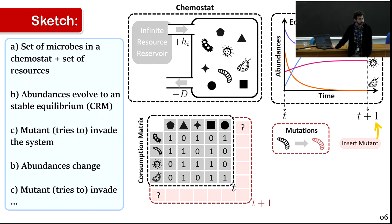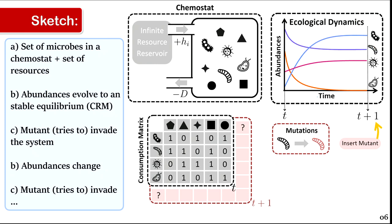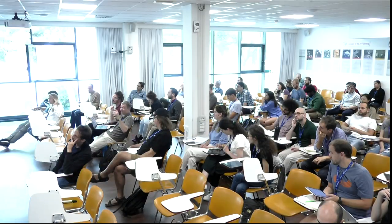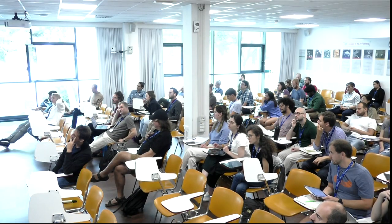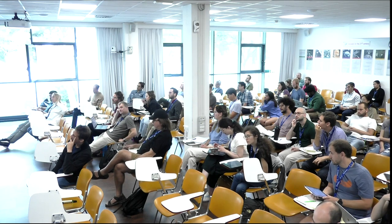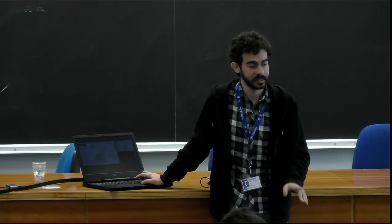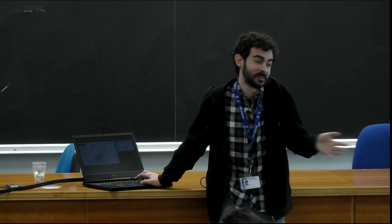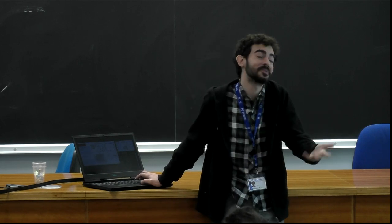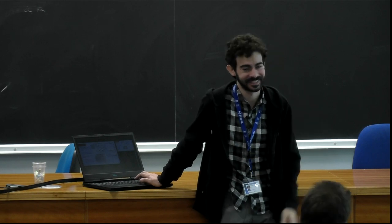Audience: Is there some constraint on the total amount of resources — as you add new kinds, is the total amount fixed? Speaker: Yes, there is one constraint I'll talk about — it appears very naturally in the system. You can include it or not, but it does appear naturally.